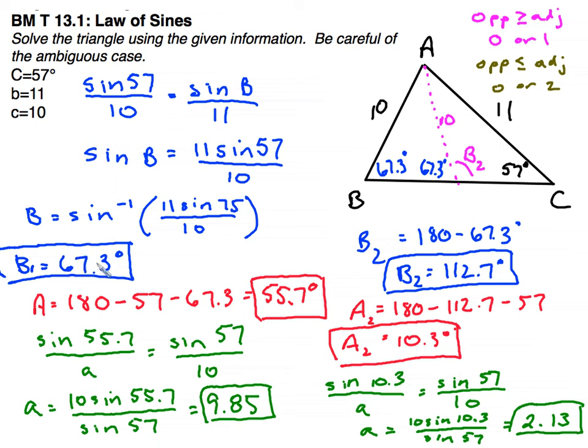And there I have my two solutions for this ambiguous case. 67.3 degrees, 55.7 degrees, and 9.85 for triangle 1. And triangle 2 is 112.7 degrees, 10.3 degrees, and 2.13 units.